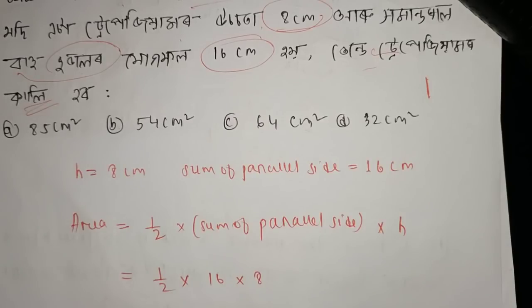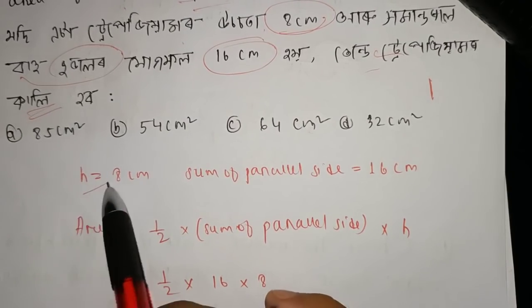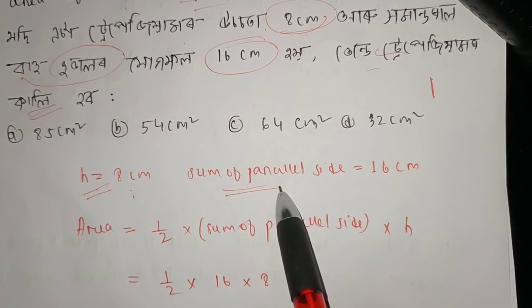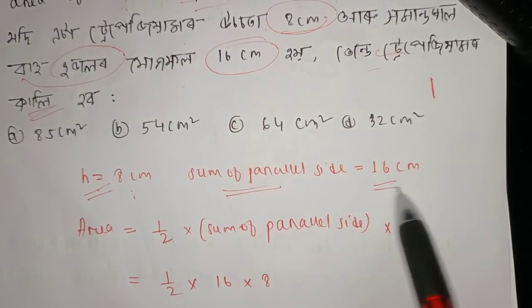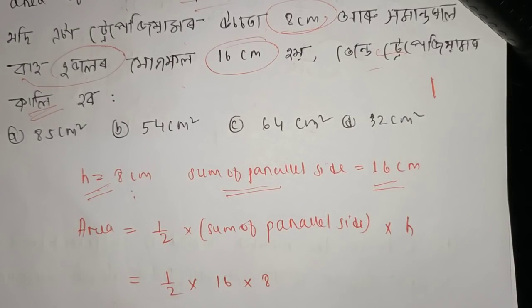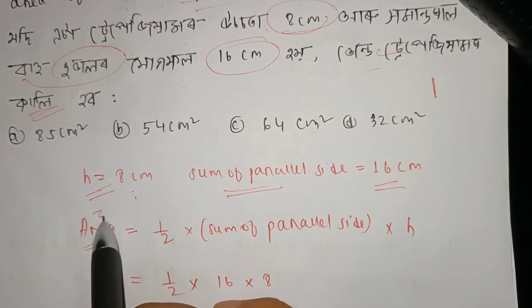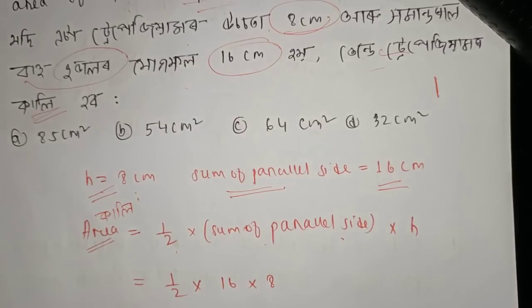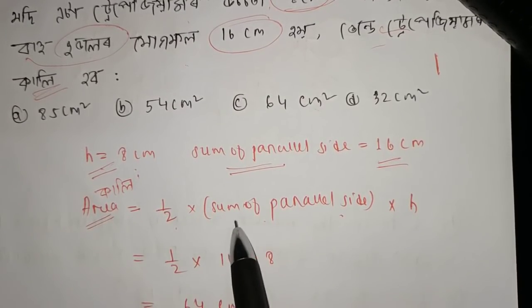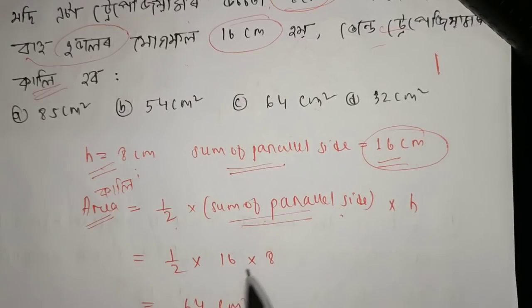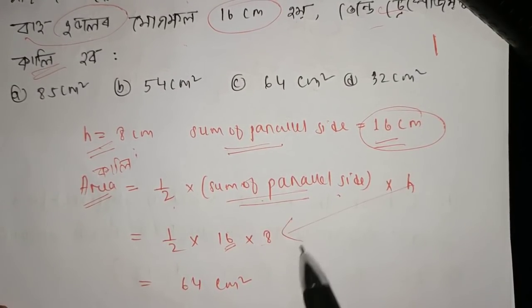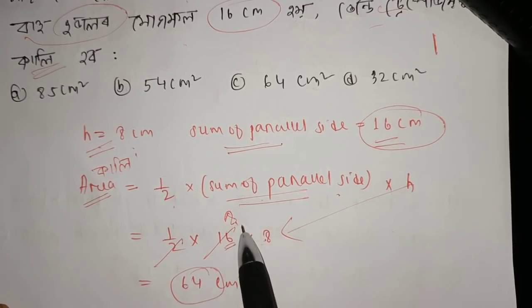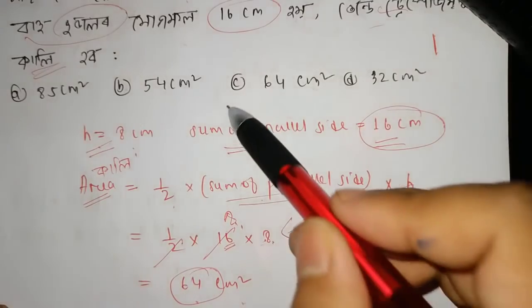With the standard definition, the area of a trapezium is: ½ × (sum of parallel sides) × height. So the area equals ½ × 16 × 8, which gives us the result in square centimetres.